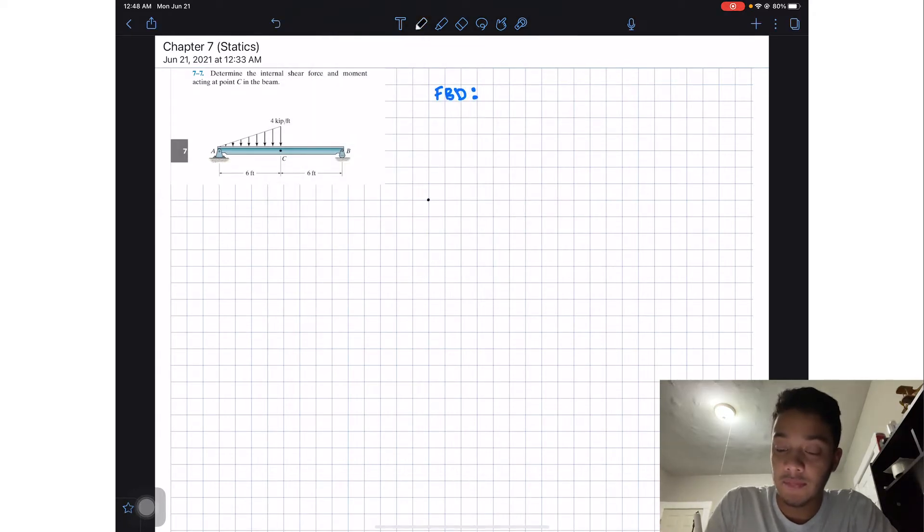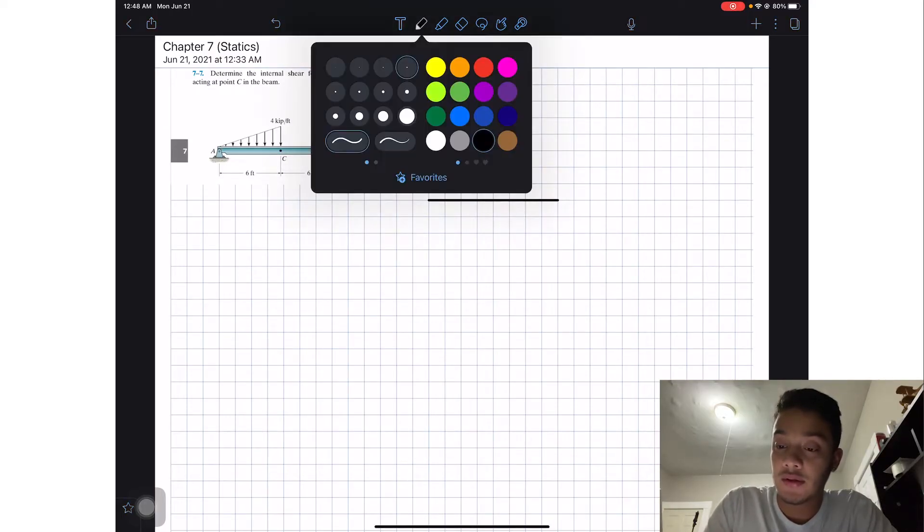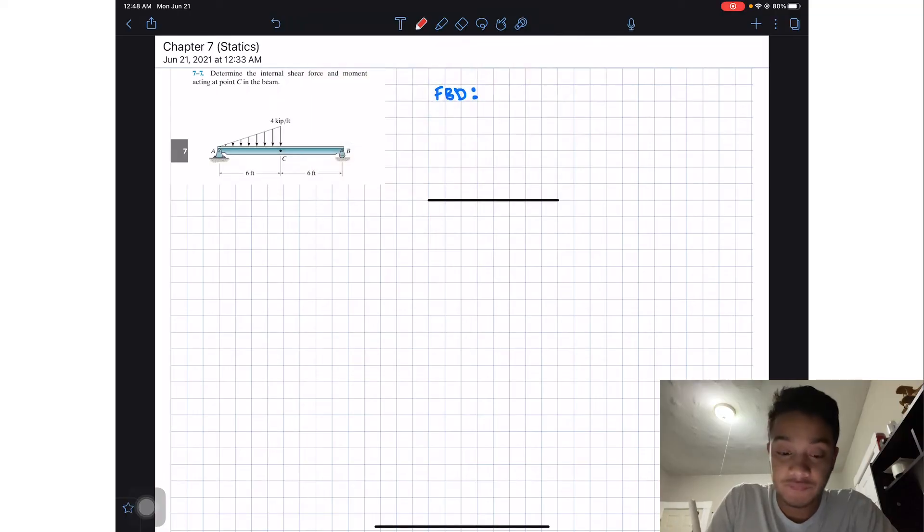My part will look something like this. We will have at A, since we have a pin connection, we will have Ay and Ax. And then at B we have a roller therefore we're going to have a By. And last we're going to have a distributed load, so our distributed load is going to be the area under that triangular load shape.